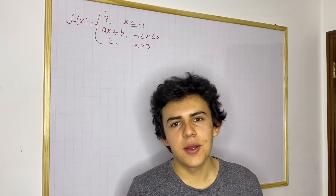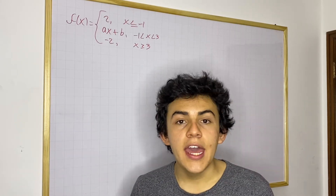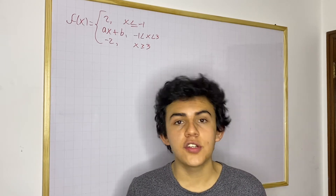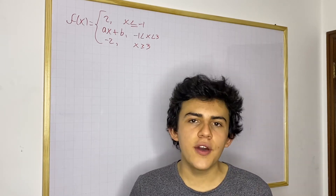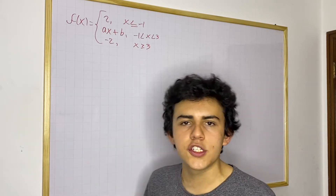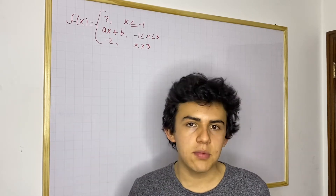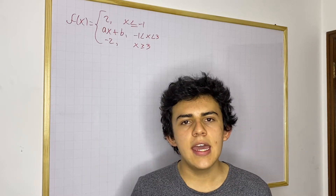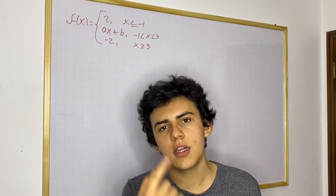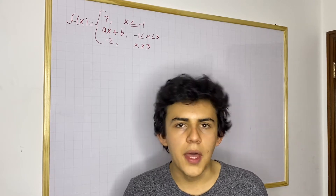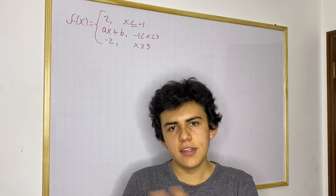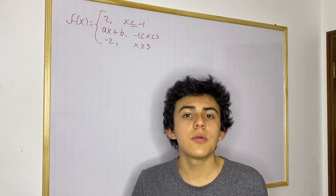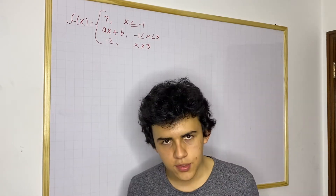Hey boys, so today I want to solve with you a continuity problem. In this case we're going to have a piecewise function with two constants that we need to find in order so that we can make the function continuous at two x values. In the last video we did a piecewise function with just one constant, and in this case we're going to have two constants and three pieces, which means we're also going to have two breaking points.